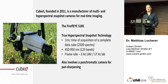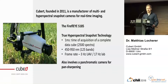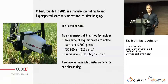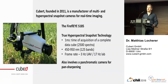What you see here is our already well-known model, the Firefly S185. This device integrates two cameras. The first camera is the spectral device with a resolution of 50x50 pixels and 125 bands, covering a spectral range from 450 to 950 nanometers. We achieve a frame rate of 3 Hz when used on a UAV or up to 17 Hz when used in the laboratory.